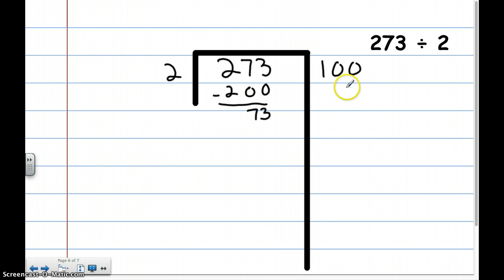2 times 40 is 80. Well, that's too big. So, I can say 30. 2 times 30 is 60. So, 2 times this 30 is going to be 60. And then I'm going to have 13 left over.